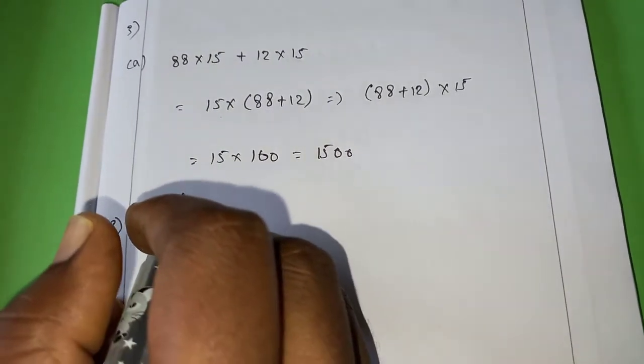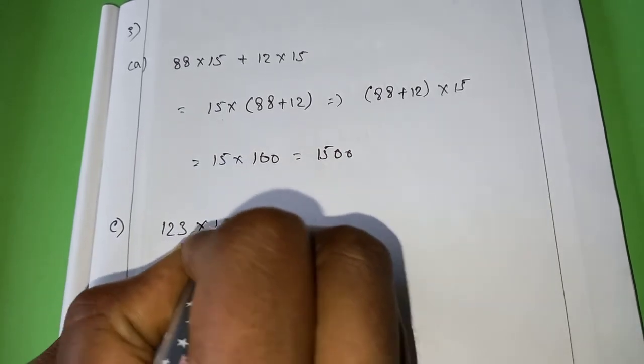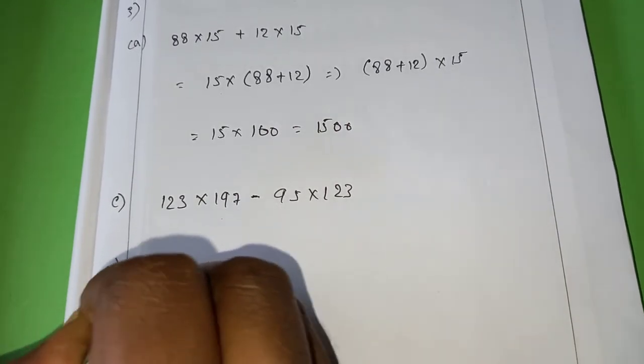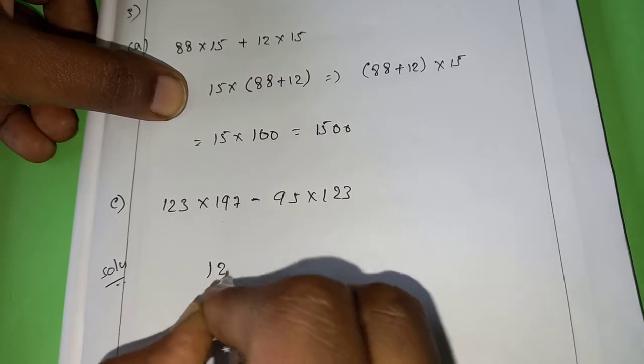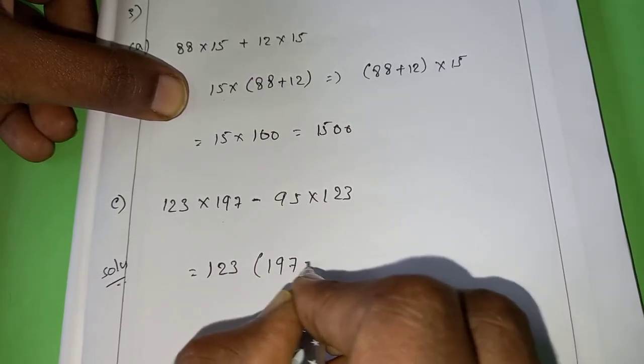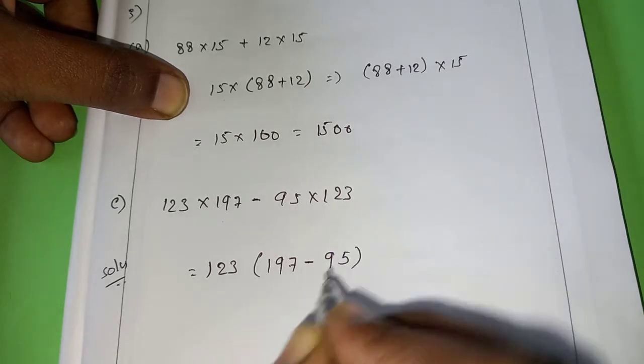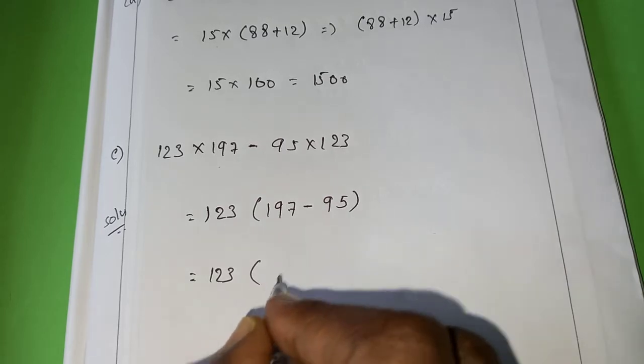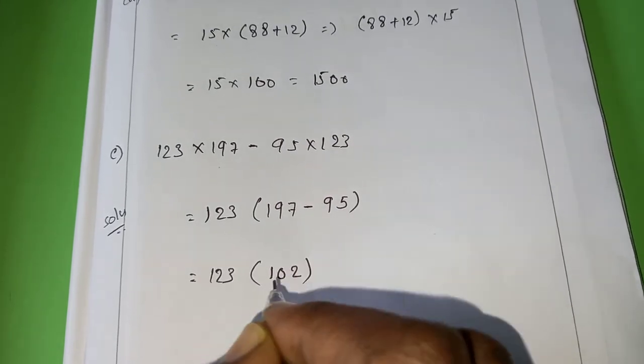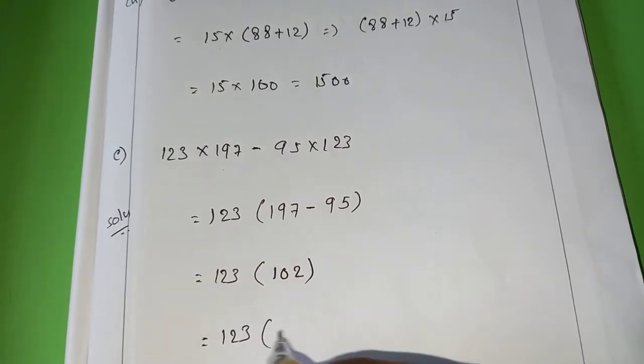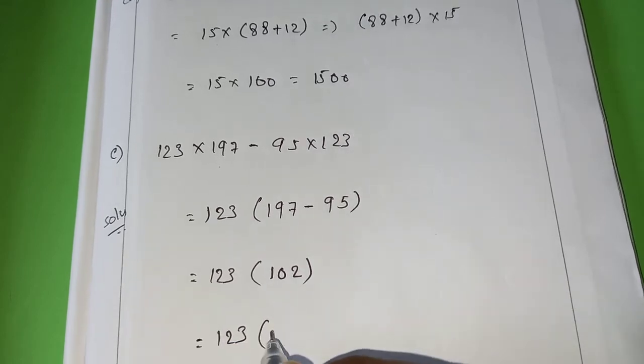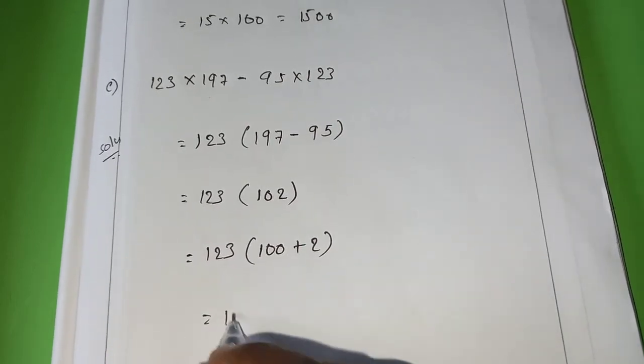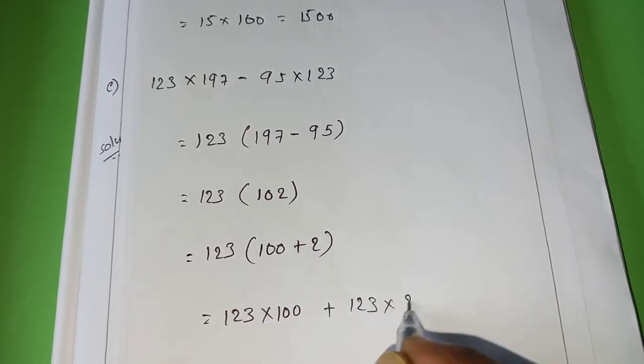I will tell E. 123 into 197 minus 95 into 123. So which is common here? 123 into 197 minus 95. 123 into 197 minus 95 is 102. This 102, if I multiply with 123, it will be a huge one. So I am going to change it as 100 plus 2.